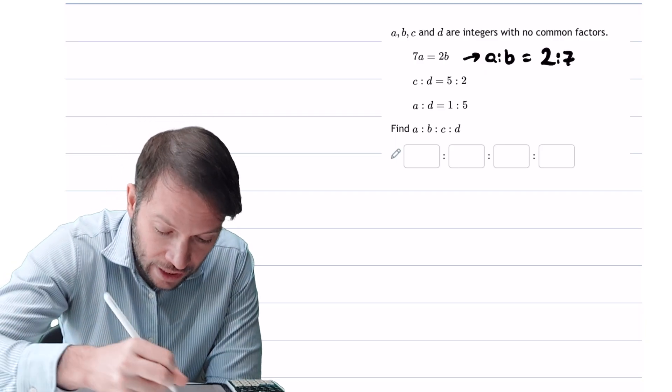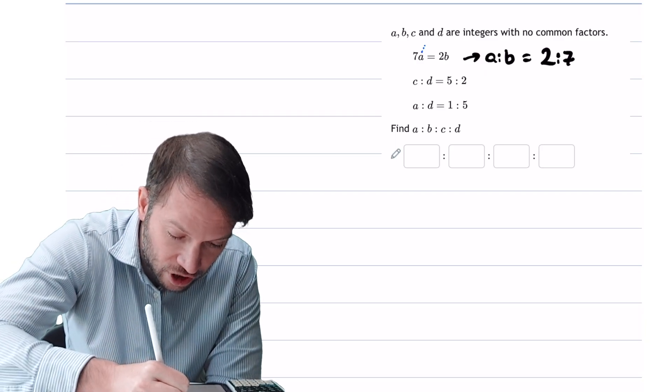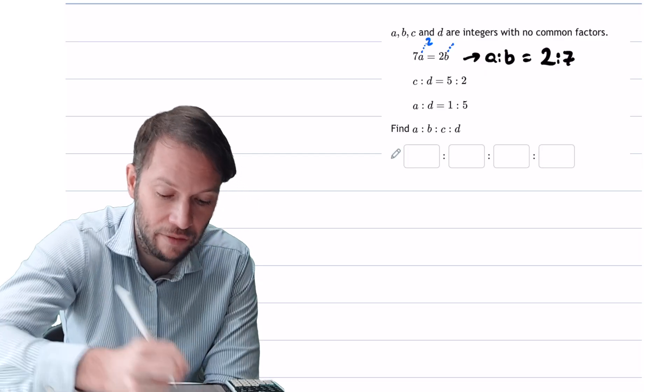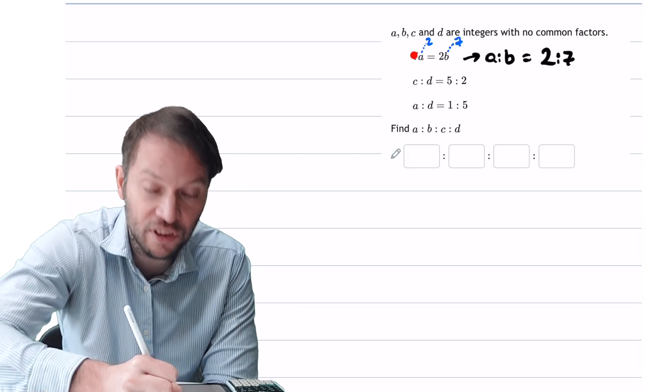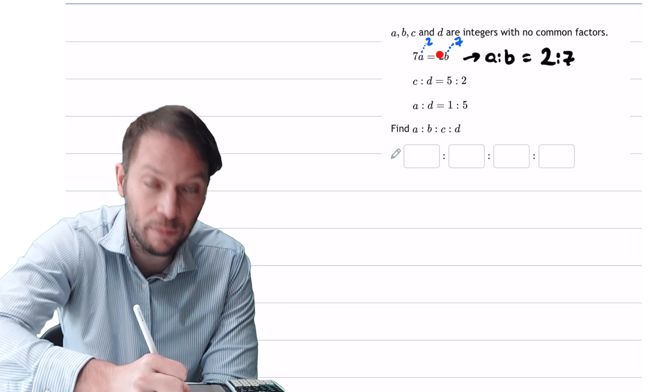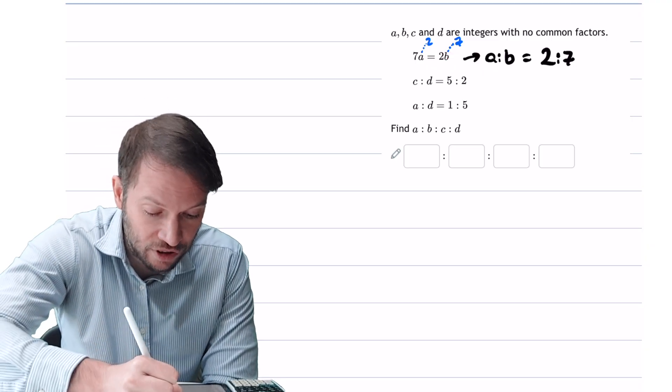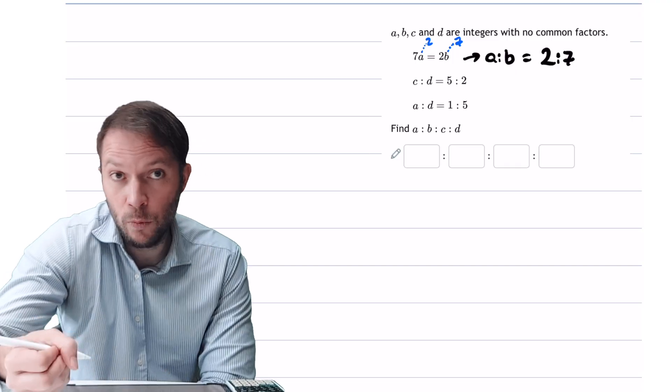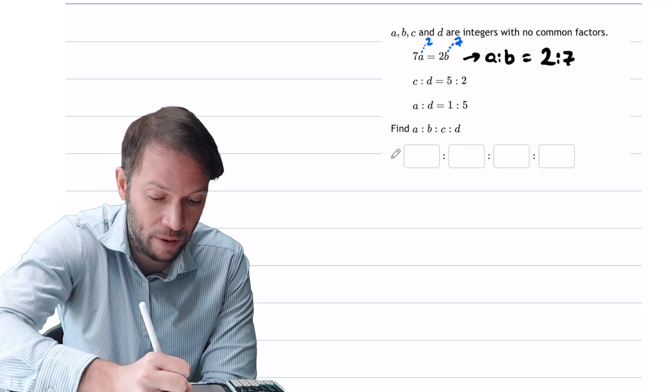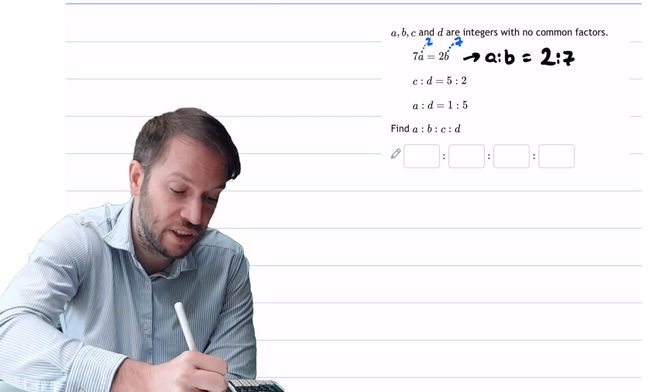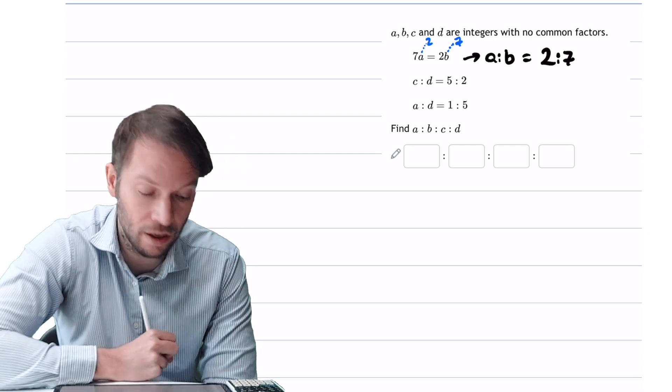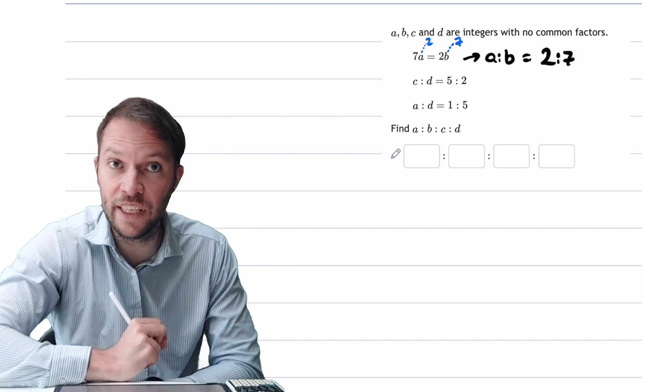Why does that work? Well let's say a was equal to 2, and b was equal to 7. Can you see that 7 times 2 is 14, and 2 times 7 is 14? So they'll be equal, and therefore if a was 2 and b was 7, the ratio would be 2 to 7. We could have also made a 4, for example, and b 14, and it would still work, but they would still simplify to a ratio of 2 to 7. So just swap the numbers, that's the easy way of doing it.